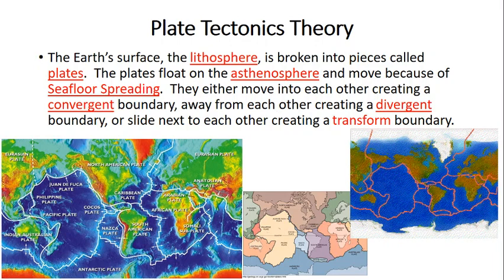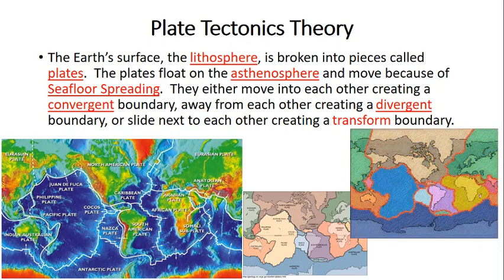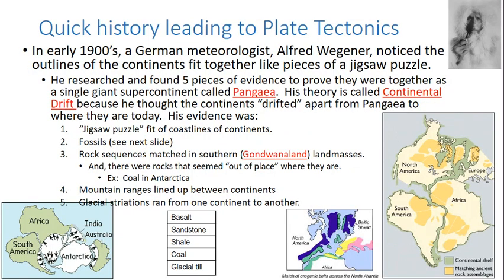We're starting with where this plate tectonics theory first really started. It first started with a guy named Alfred Wegener. You see him up here dressed in his outfit for up in Greenland, where he did most of his work.